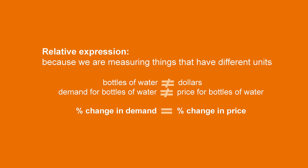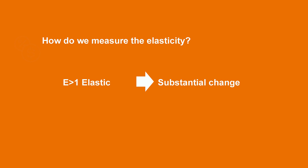Why are we expressing everything as a percentage? This is because we are measuring things that have different units. In our example, we were mixing price with bottles of water. The thing we want to capture is how much did quantity change according to the price change. So, the variation between each change is what will come from the elasticity, and this allows us to compare two different variables with different units. A variable is called elastic when it shows substantial change with reference to changes in another — this occurs when the elasticity is higher than one. If its change were slight, then it would be inelastic, and this happens when the elasticity is lower than one.